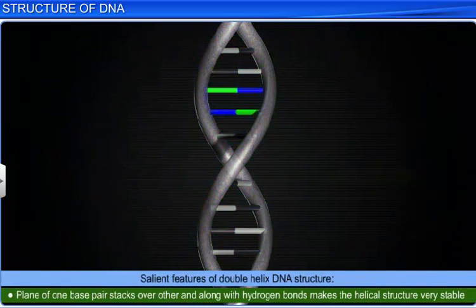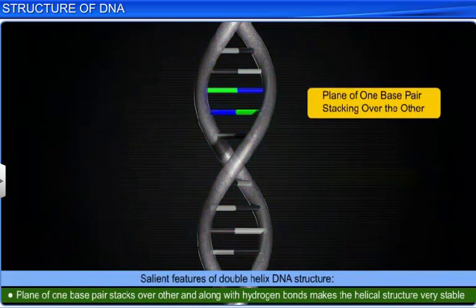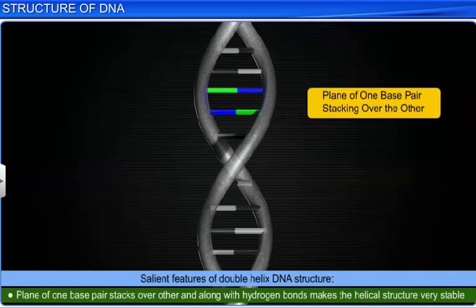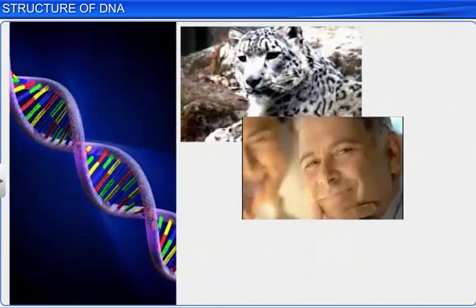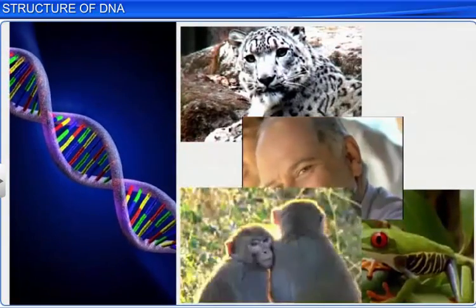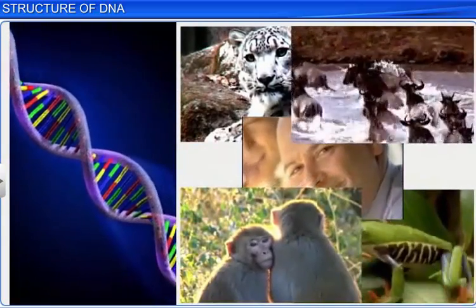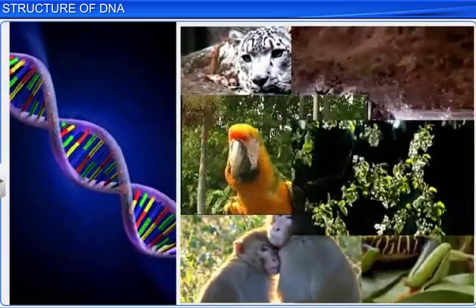Additionally, in a DNA double helix, the plane of one base pair stacks over the other, which along with the hydrogen bonds makes the helical structure very stable. The stable DNA helix structure allows it to be the genetic material that has instructions for the development and functioning of all known living organisms.